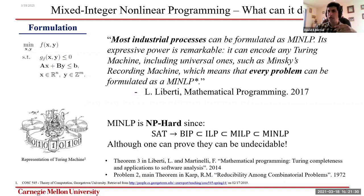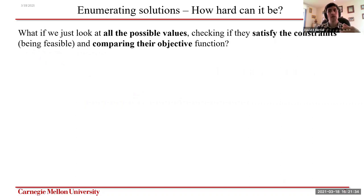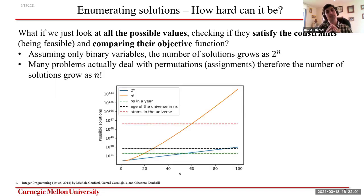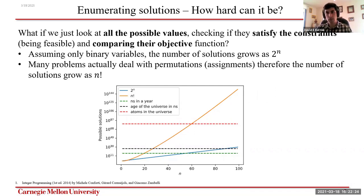We are still interested in solving these problems because of their many applications. Someone new to the field might suggest: you have a finite set of discrete variables, so why not try all combinations? Evaluate whether each combination satisfies the constraints, rank them by the objective, and you're done. Unfortunately that is not practical because the number of possible solutions grows exponentially fast — in the best case as two-to-the-n, and for assignment problems as n-factorial. Enumerating is simply not a practical approach.